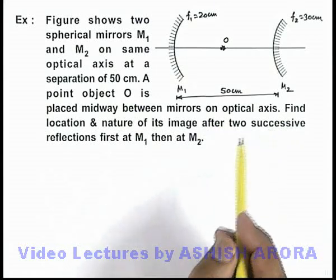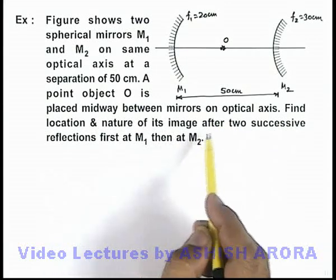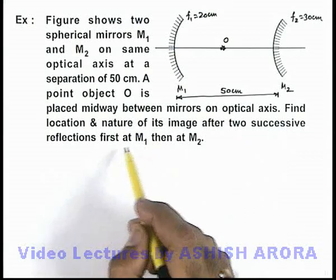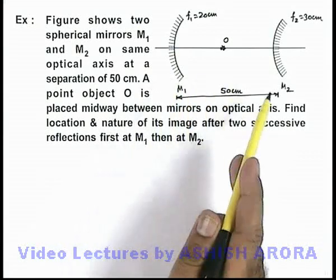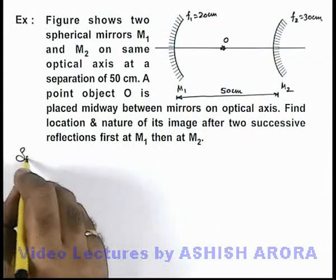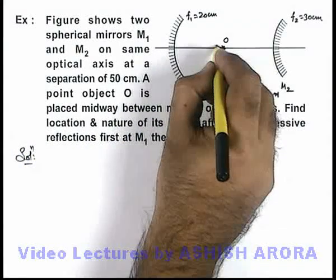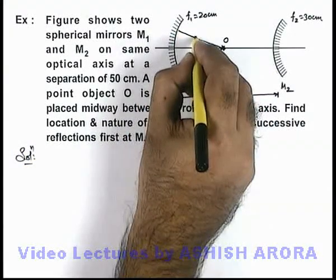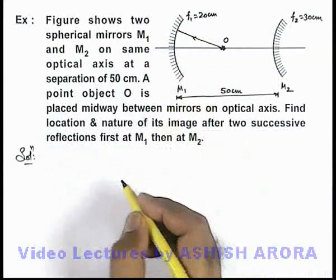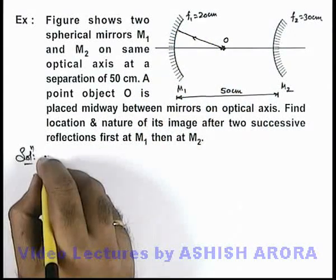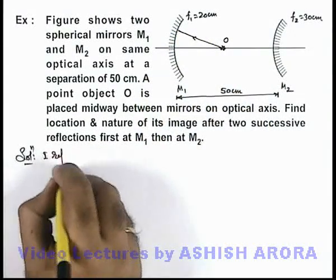We are able to find the location and nature of its image after two successive reflections, first taken at M1 then at M2. Here in this situation, if we consider that first light rays from object are incident on mirror M1, then we can consider first reflection.